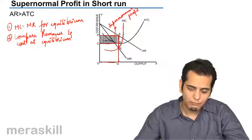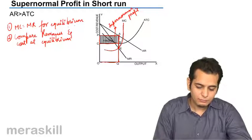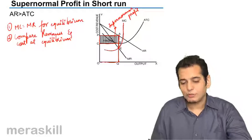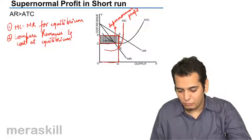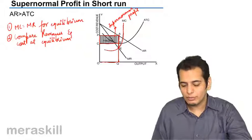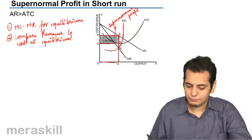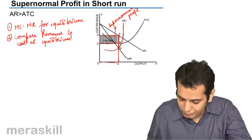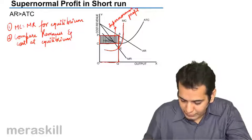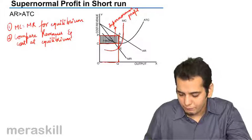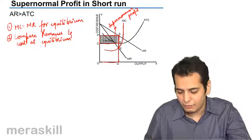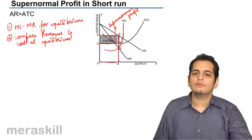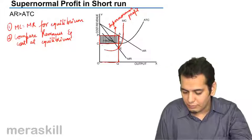I will just take a quick recap of this. First step is find a point of equilibrium, that is where MC equals MR. I saw that MC is cutting MR from below at point E. So E becomes the point of equilibrium wherein OQ is the equilibrium output. Now the second step is compare revenues with cost at the point of equilibrium. If the point of equilibrium is E, from point E go till AR you will get your revenue, and from point E go till ATC you will get your cost. If revenues are more than the cost, you will have a situation of supernormal profit which will be given by this rectangle.